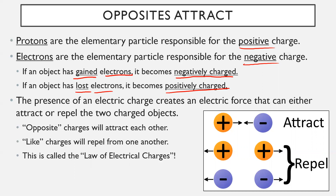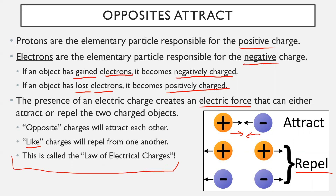The presence of an electric charge creates something called an electric force. This is really important when you go into physics. An electric force can either attract or repel two charged objects — this is where the phrase 'opposites attract' comes in. Two opposite charges attract each other; the electric force pushes them together. But if they have the same charge — like charges — they're going to repel. Two positively charged things push away from each other, and the same with two negatively charged things. This is called the law of electrical charges.